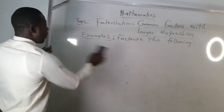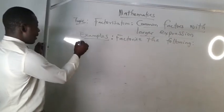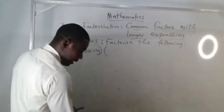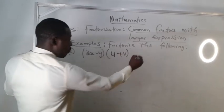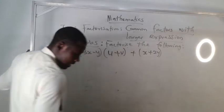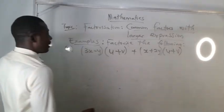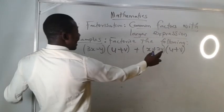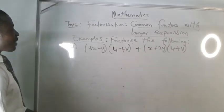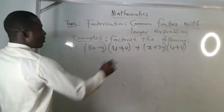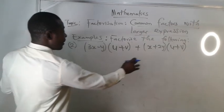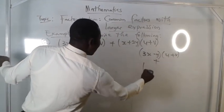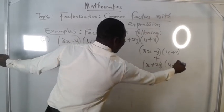Example number two: three x minus y, times u plus v, plus x plus two y, times u plus v. So the full expression is three x minus y, into u plus v, plus x plus two y, into u plus v. Let's look at what's common between these two different parts of the factorization.